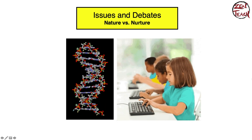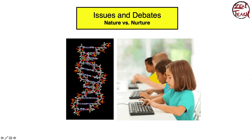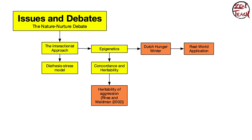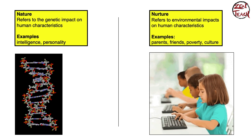Welcome back everyone. This is Issues and Debates — today we'll be looking at nature versus nurture. Here's a short overview of today's lesson: first we'll look at the interactionist approach, then something called the diathesis stress model, then epigenetics and how that relates to concordance and heritability. We'll look at a study to understand heritability, the Dutch Hunger Winter, and real-world applications of epigenetics.